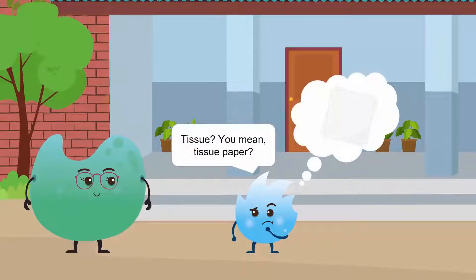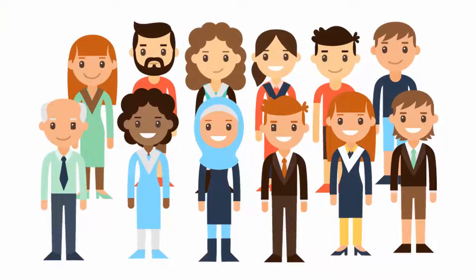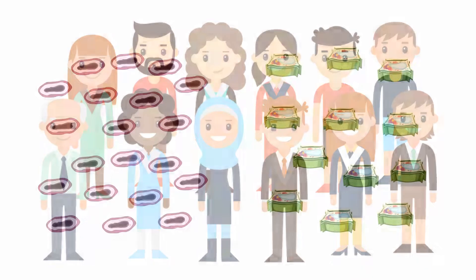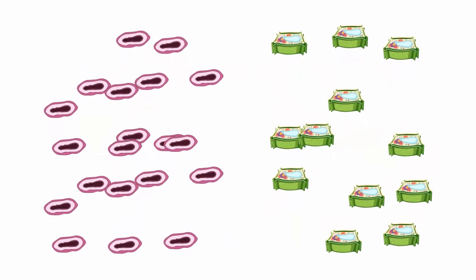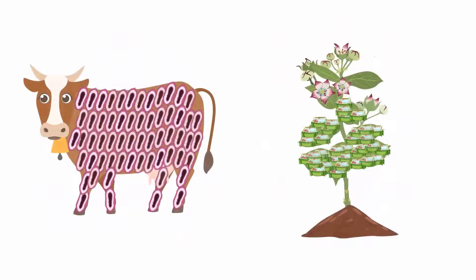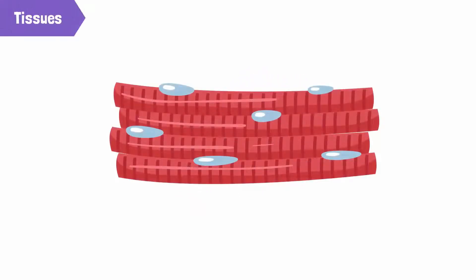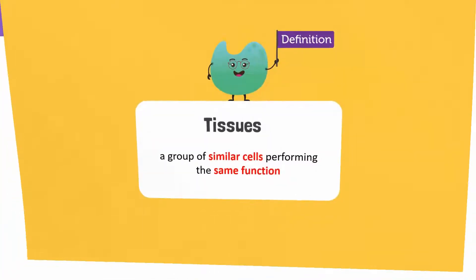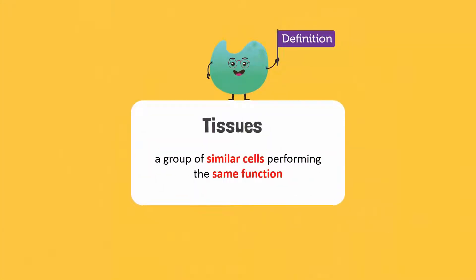Tissue? You mean tissue paper? No, Spiky. You know how humans are part of communities to connect and work together? Similarly, cells connect and work together in multicellular organisms like plants and animals. When similar cells combine and work together, tissues are formed. So, a group of similar cells performing the same functions form a tissue. This is not the same thing as tissue paper.